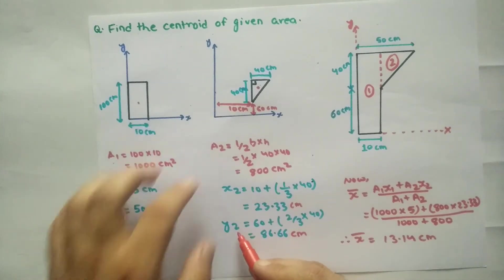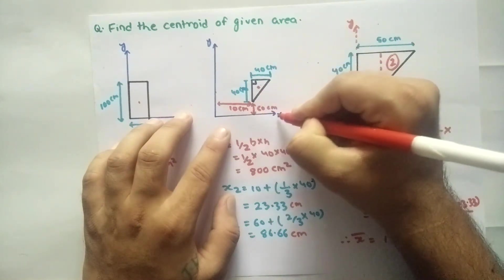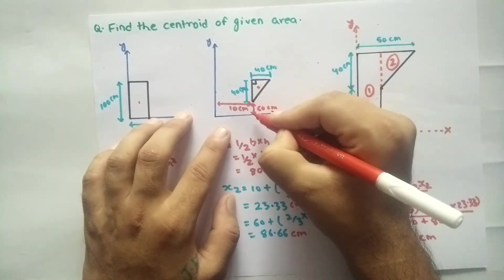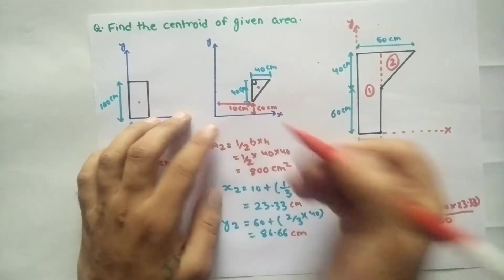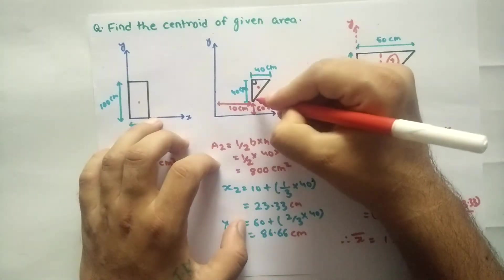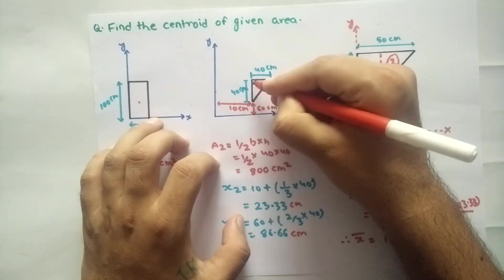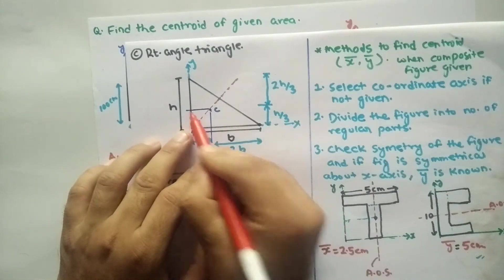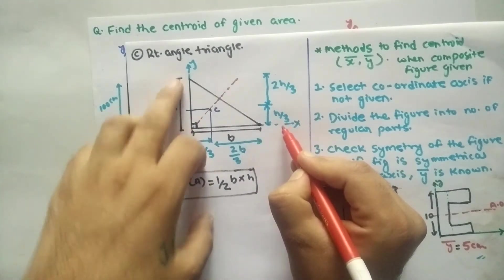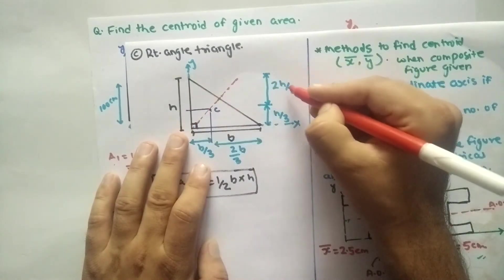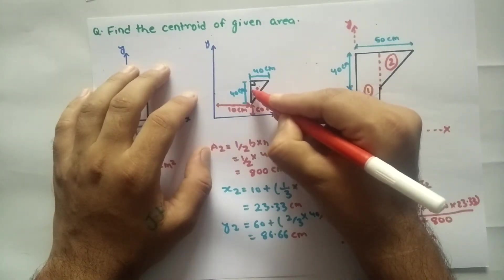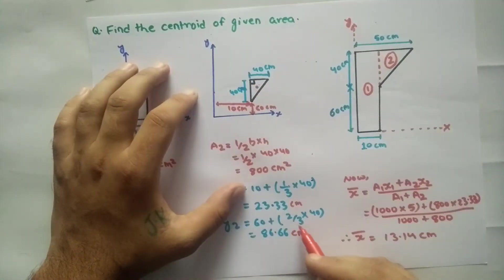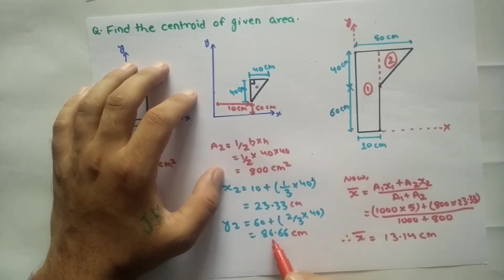This point gives us y-bar for the triangle. Looking at which corner is bigger: the right-angle side is the larger side, so from the right-angle side the centroid is at 1/3 of the distance, and from the opposite side it is at 2/3 of the distance. In this particular figure, we have y2 = 60 + 2/3 × 40 = 60 + 26.66 = 86.66 cm.